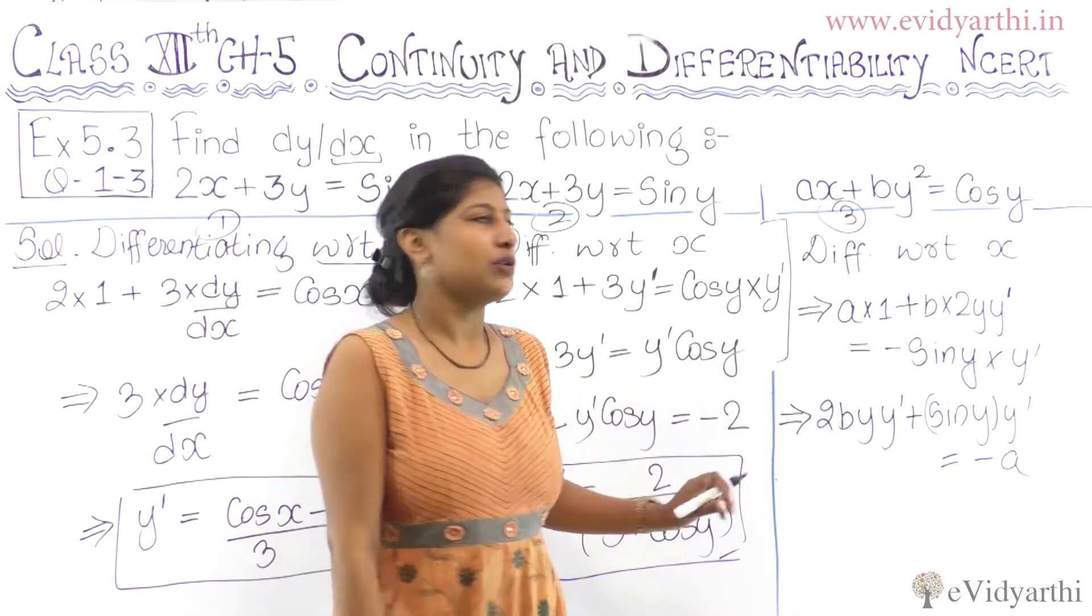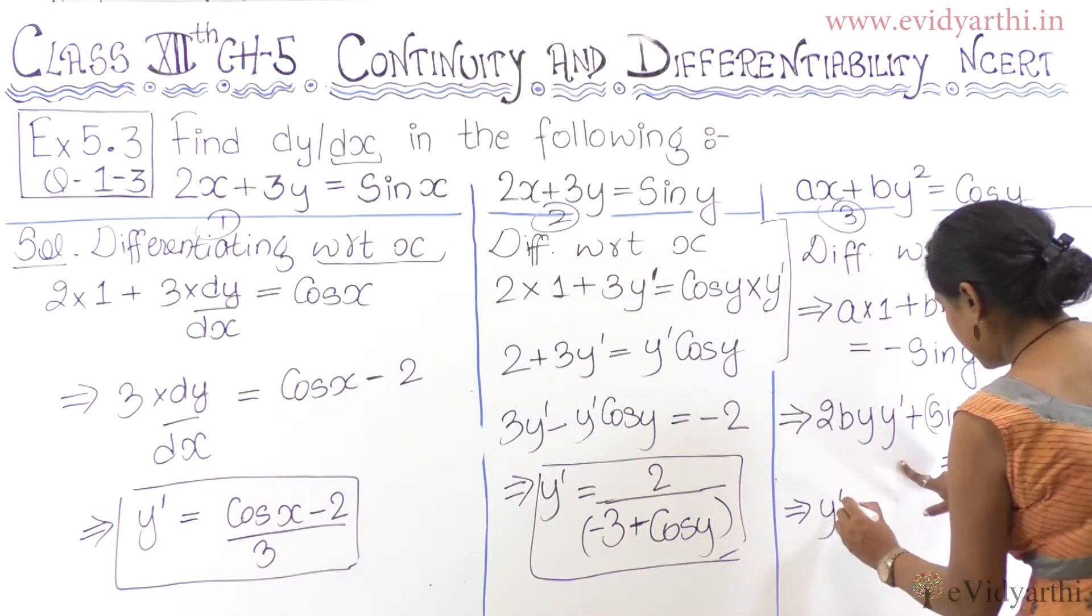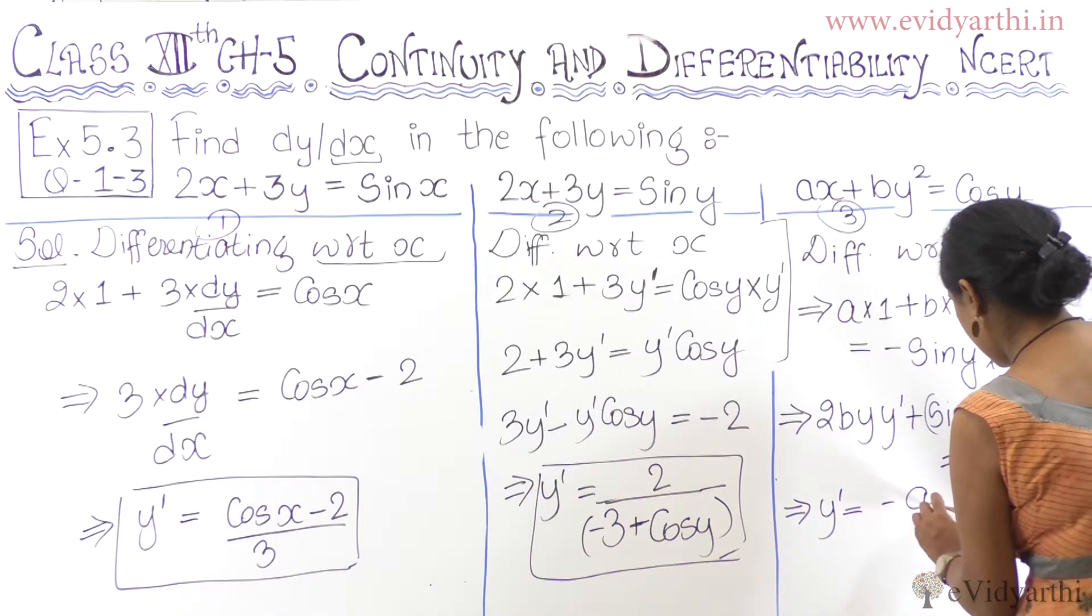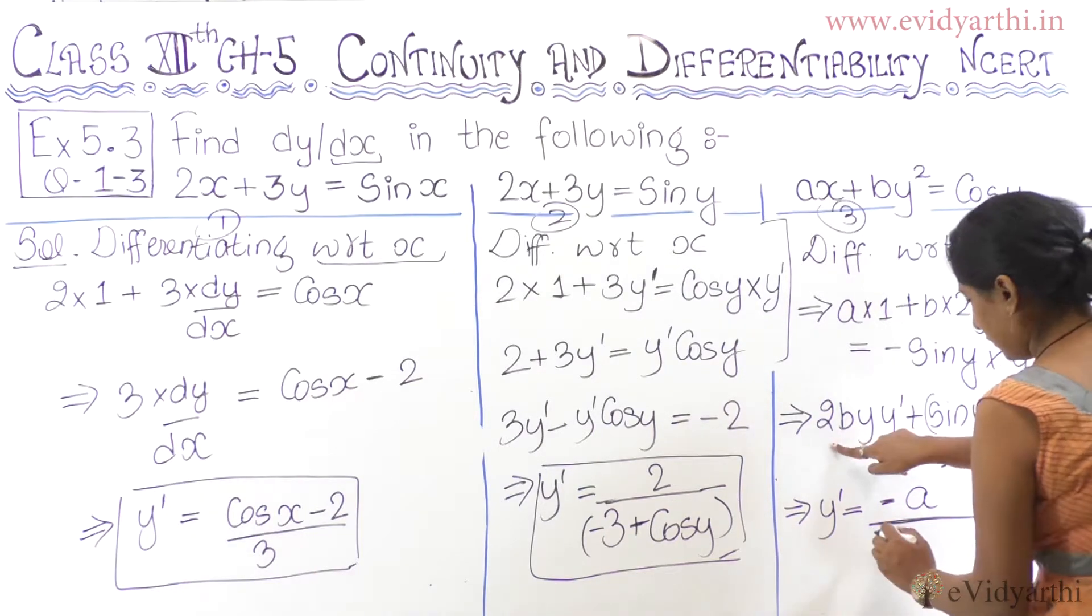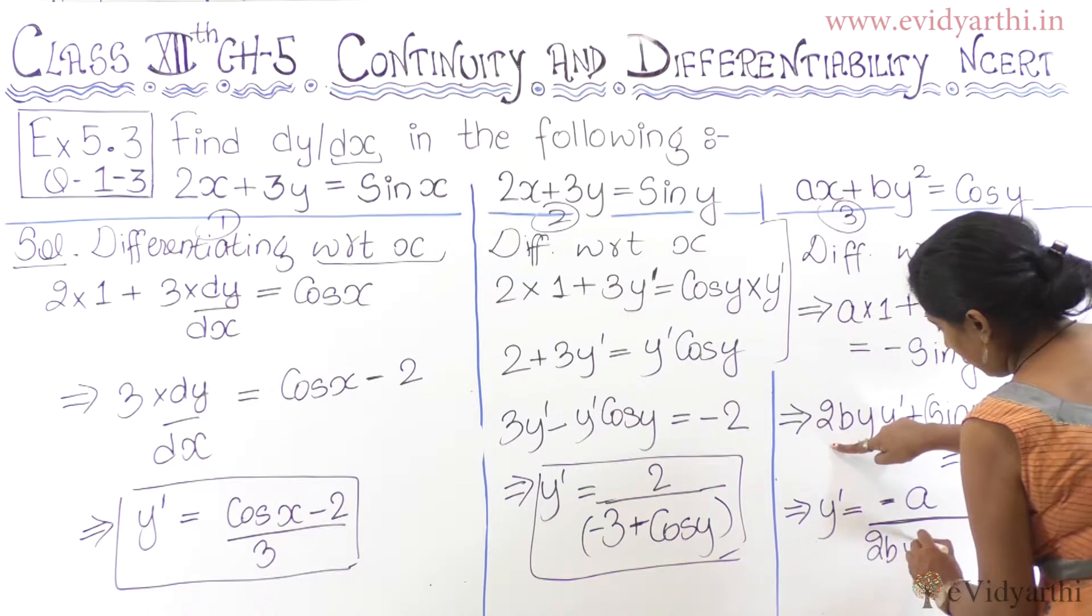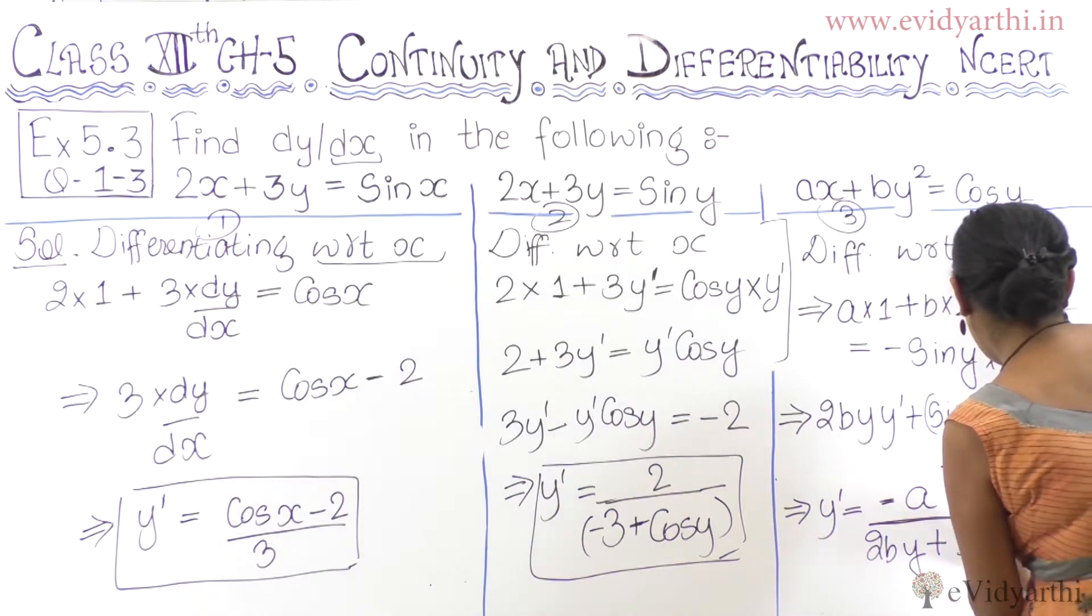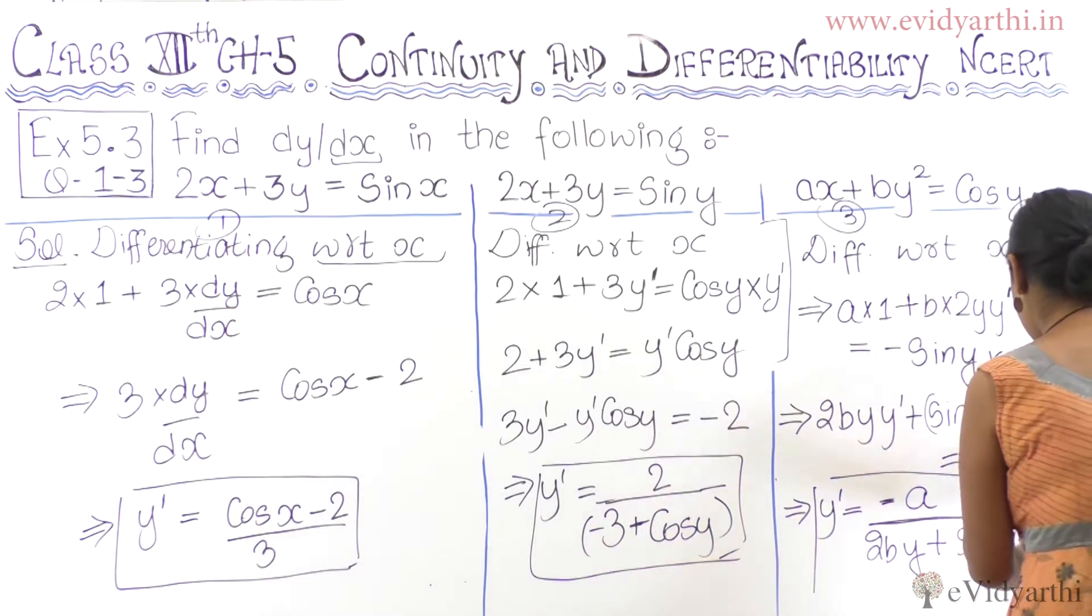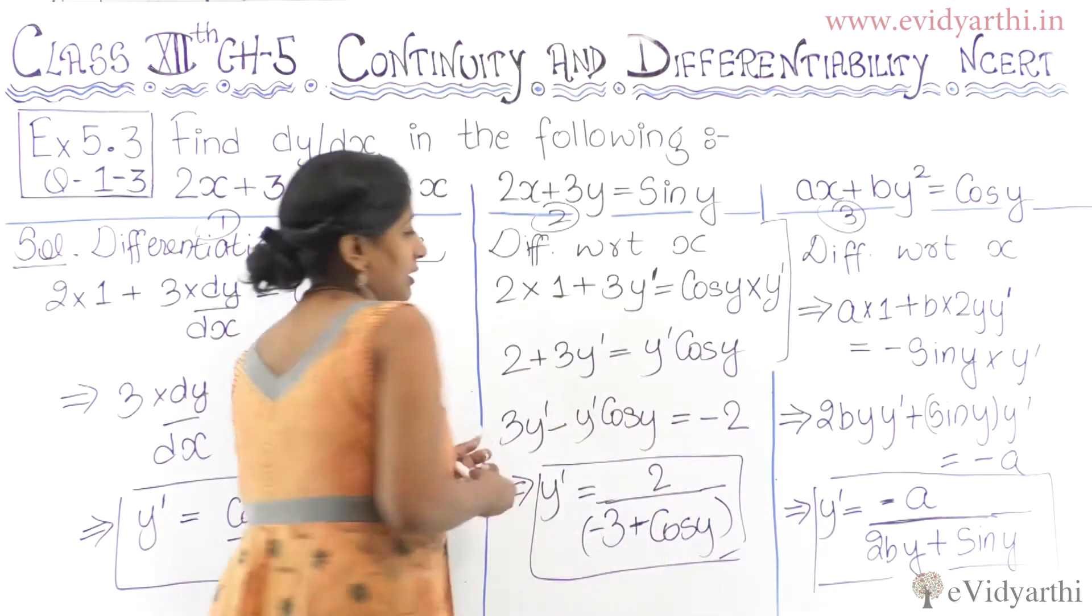Taking y dash common, you can write all of these. So here we have a minus. 2by plus sin y, whatever has y'. We take y' common. So y' equals minus a upon 2by plus sin y.